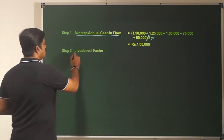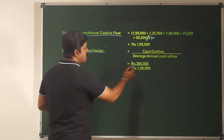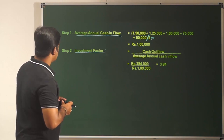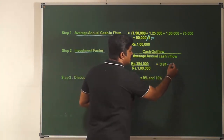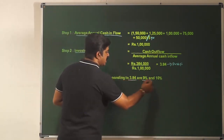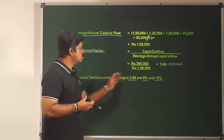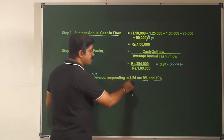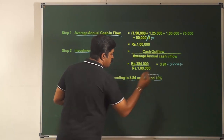Step 2: find out the investment factor, which is investment made divided by average cash inflow. The investment made is 384,000 and the average cash inflow is 100,000, so we get 3.84 — that is your investment factor. Step 3: trace 3.84 in the present value annuity factor table, and you would notice that 3.84 is lying between the discount rates of 9% and 10%.